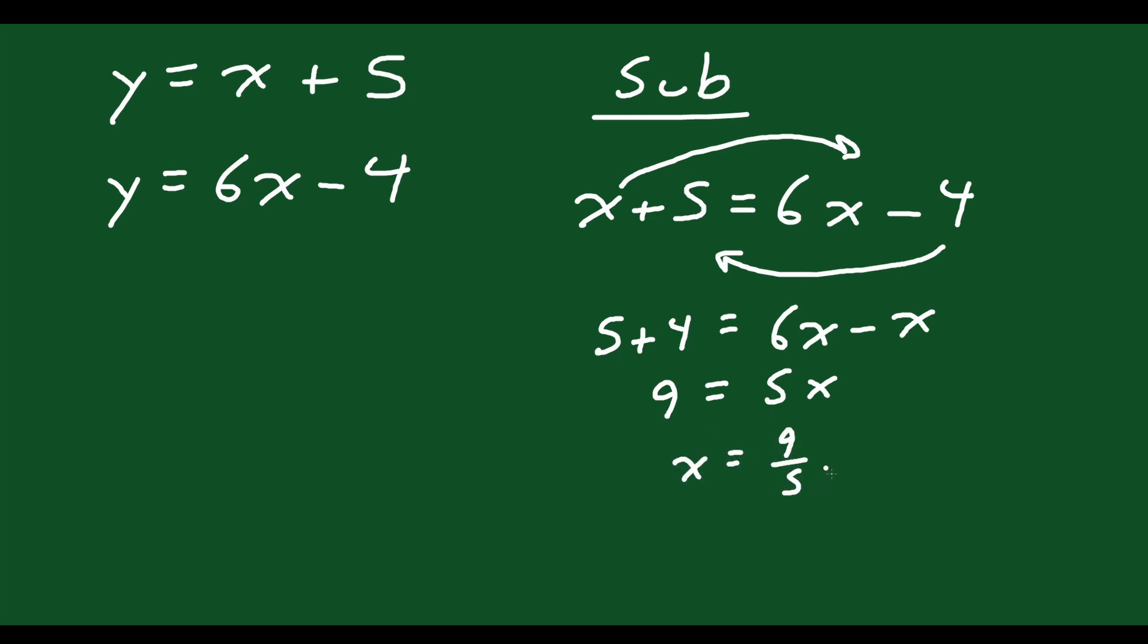Okay, and then how would I solve for y? Well I already have a definition for y, I actually have 2. y equals x plus 5 and y equals 6x minus 4. It doesn't matter which one of these I use, I can plug this x value into either one and I'll get the same answer. Let's use the first one, it looks a little bit easier.